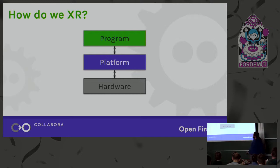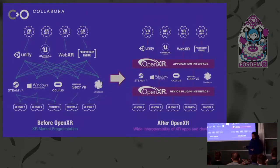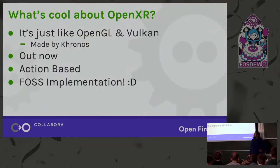How do we do XR? You have a simplified stack: your program, some platform the program runs on, and hardware underneath — the platform abstracts the hardware. For the program to talk to the platform you need an API. In the past, everybody had their own API, like the picture on the left — if you wanted to support everything you had to write to multiple APIs. That's not a good situation. OpenXR is a royalty-free collaborative API that everybody can implement, so you only write code once and support a wide variety of platforms and hardware.